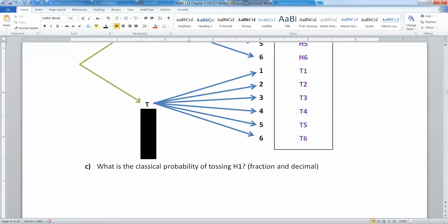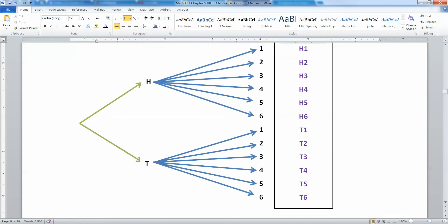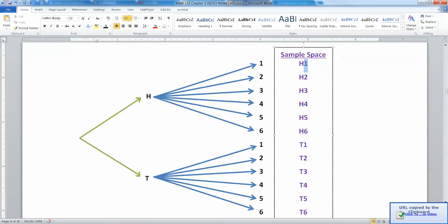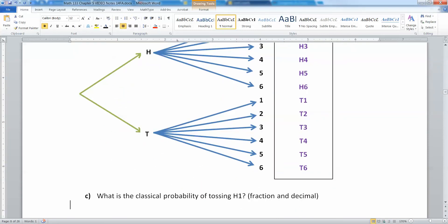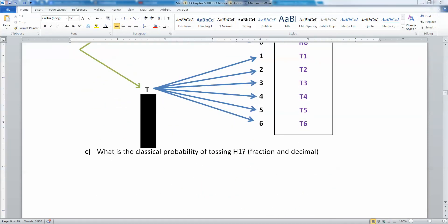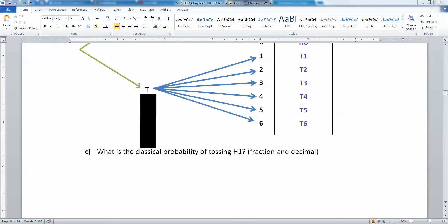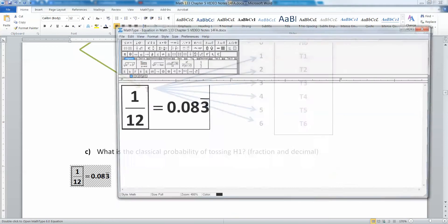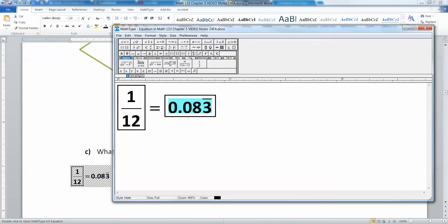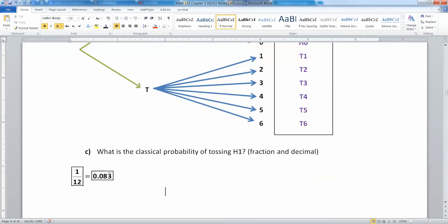So now what is the probability of tossing H1? Heads and then a one. Well, that's up here. There's one outcome out of 12. So that would mean the probability is 1 out of 12, which is 0.083 repeating. Beautiful.